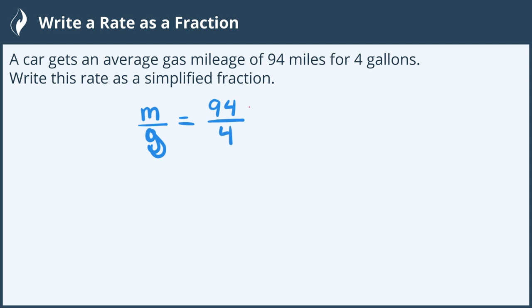I can see these are both even and this can be simplified by dividing the numerator and the denominator by 2. 94 divided by 2 is 47. 4 divided by 2 is 2.